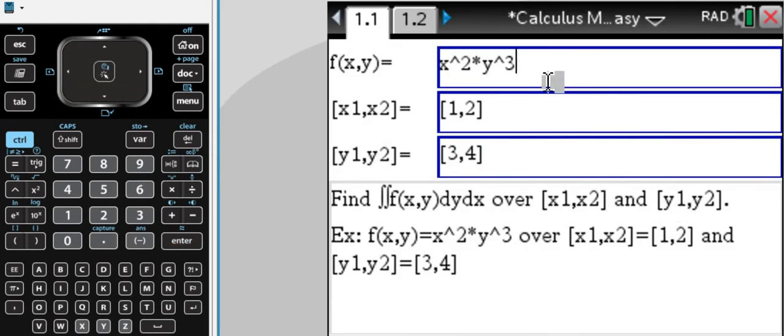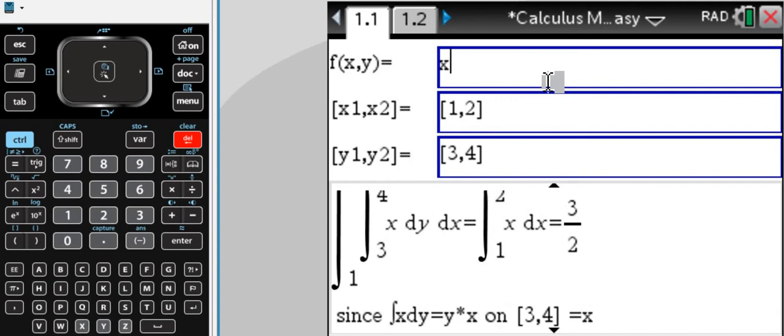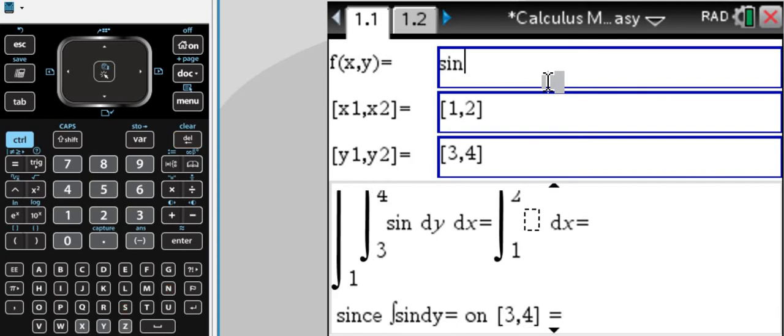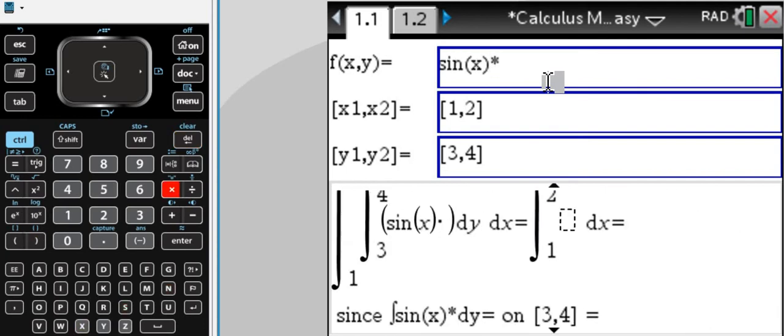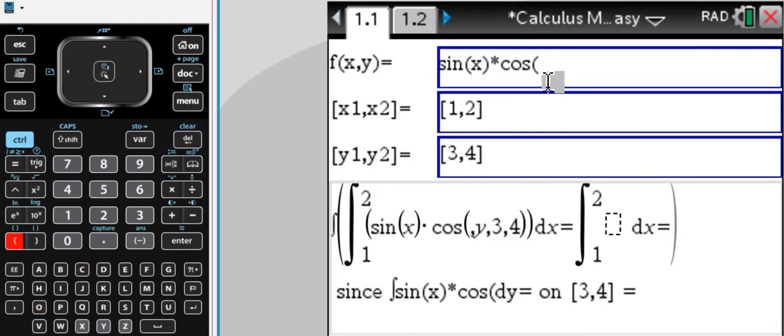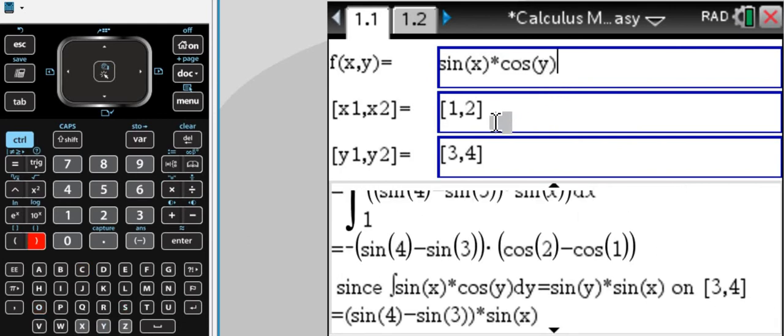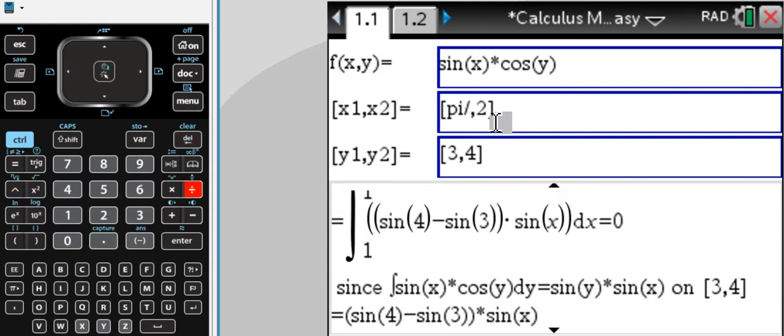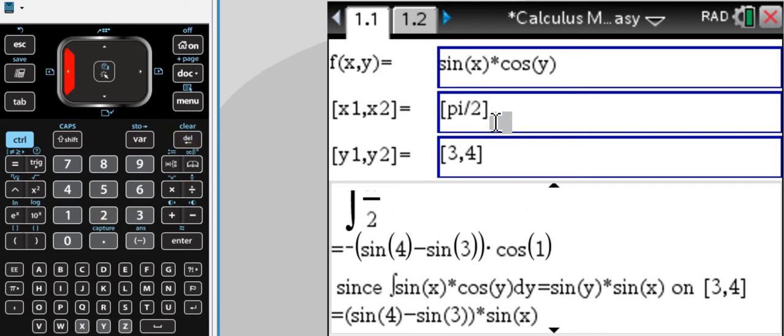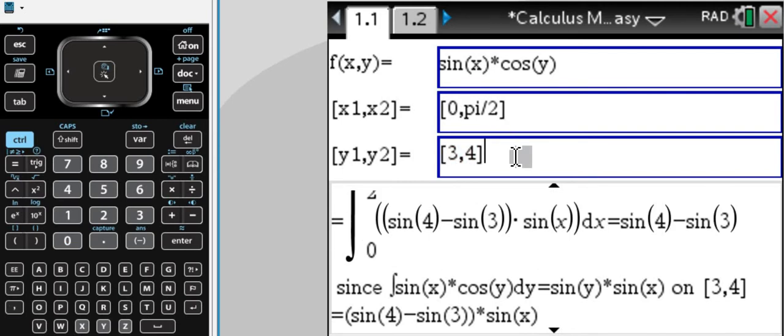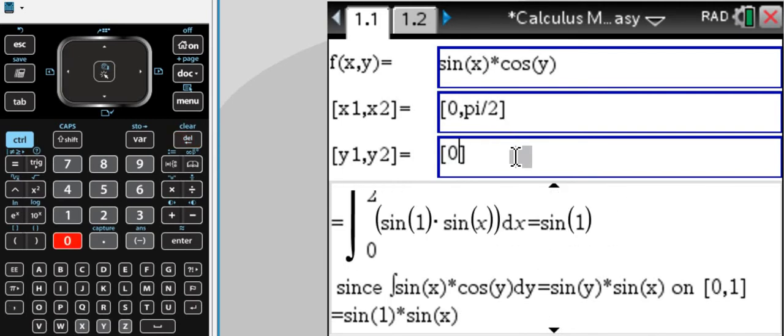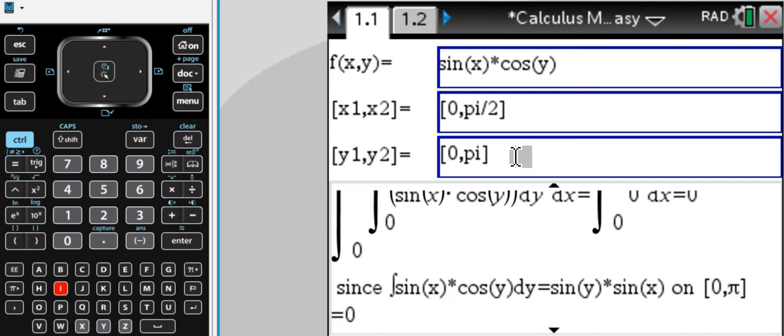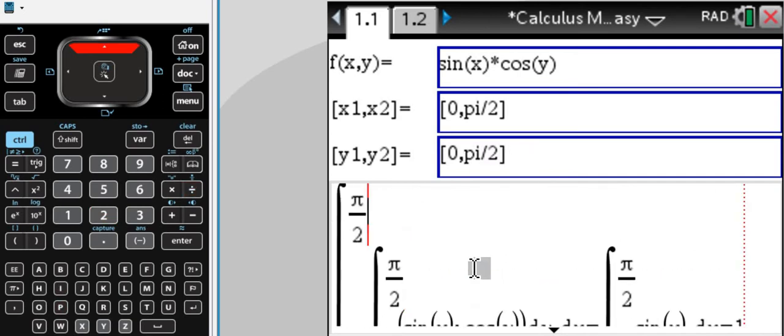So we have to enter our function here. Sine, for example, sine of x times cosine of y. And here we enter our x bounds. If you want a pi, we just type in pi. Make that the upper bounds. So zero comma pi over two. And again, zero comma pi over two.